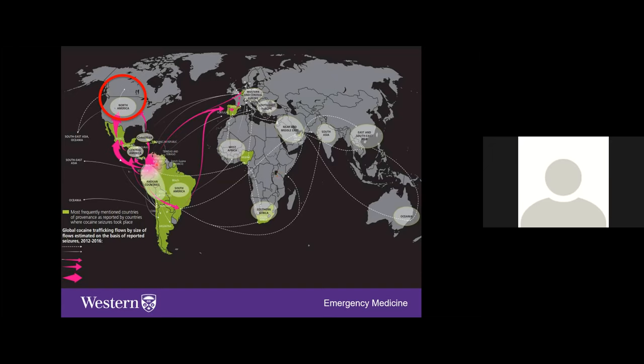The liquid coming out contains cocaine in solution, which is then sequentially boiled down, leaving a white powder residue — cocaine. The product is packaged and distributed around the world through a complex network of legal and illegal ports of entry, with the route into Canada represented by a small white line on the distribution map.